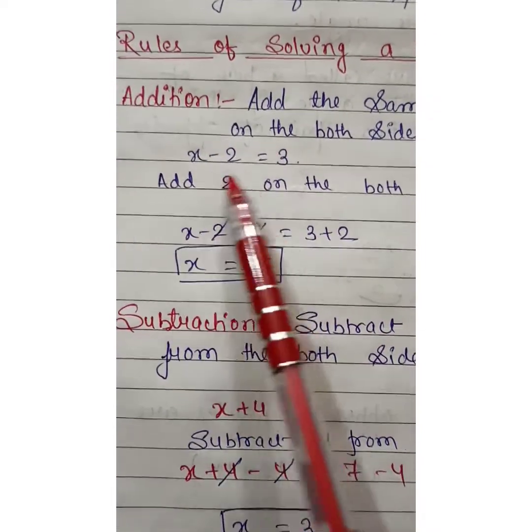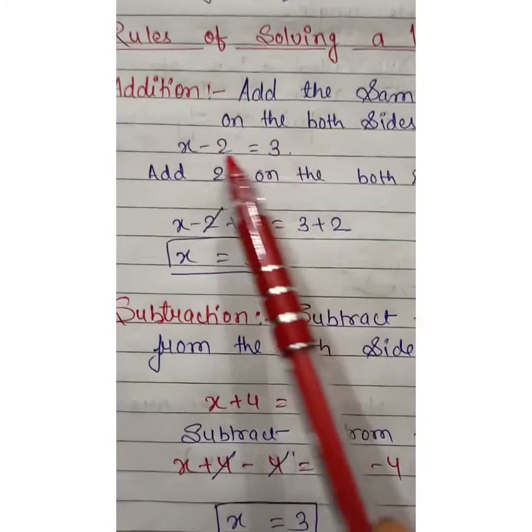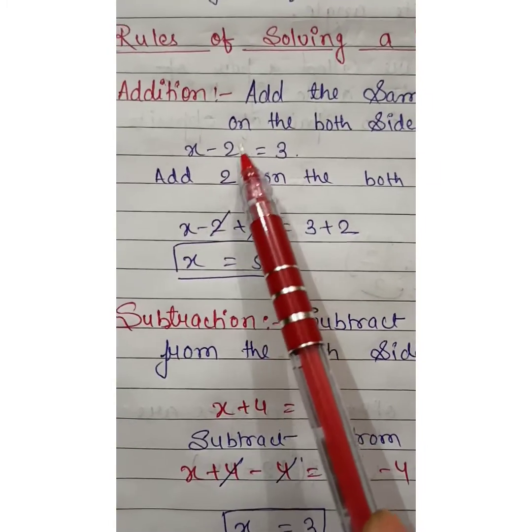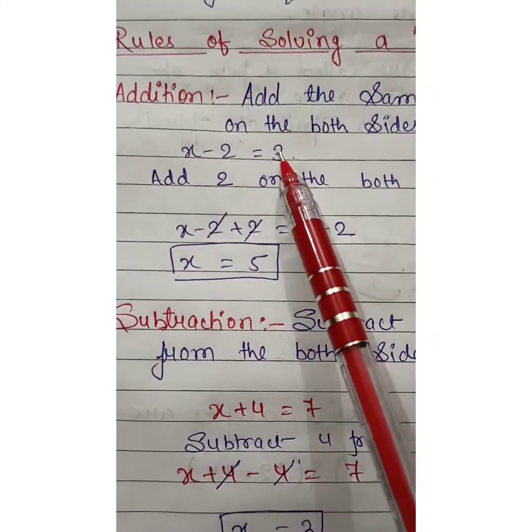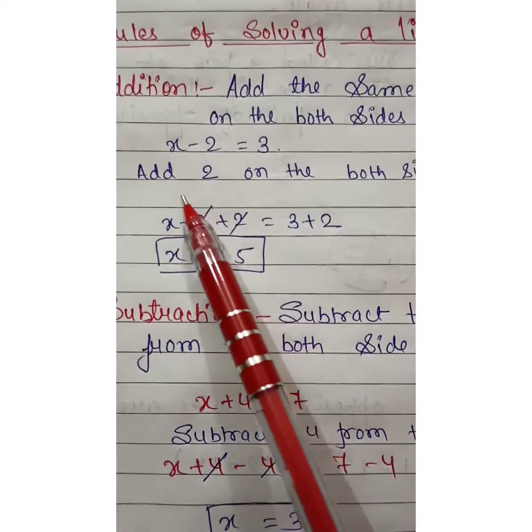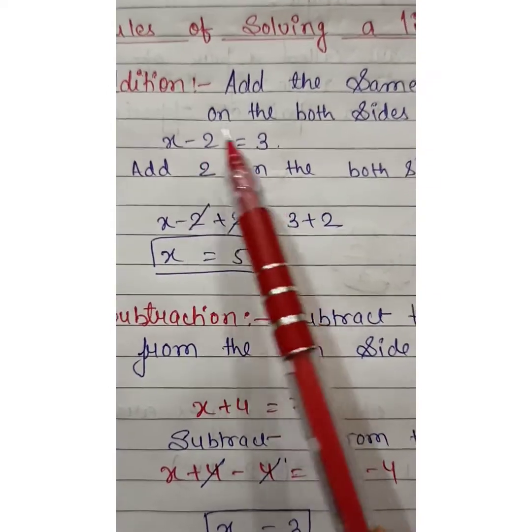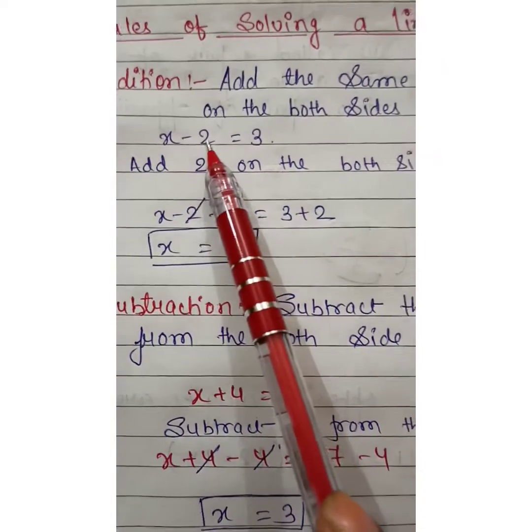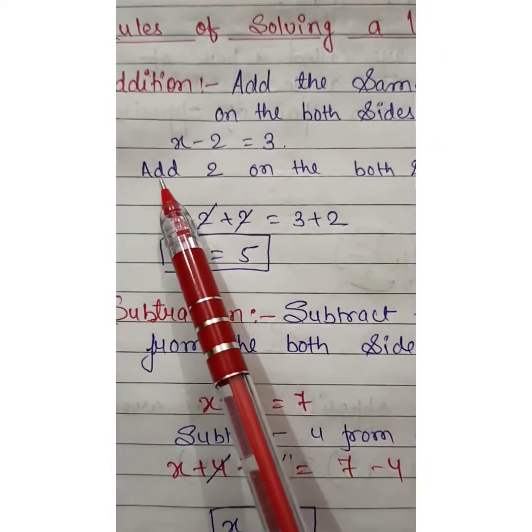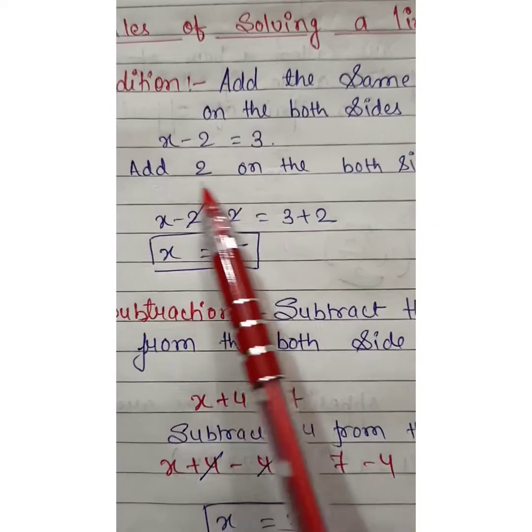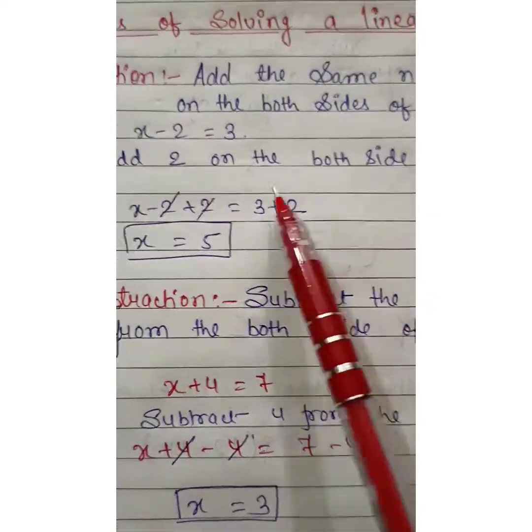Suppose we have an equation x minus 2 equals 3. The sign that appears with the number, we use its opposite sign. Here it's minus 2, so we add plus 2. Add 2 on both sides of the equation.